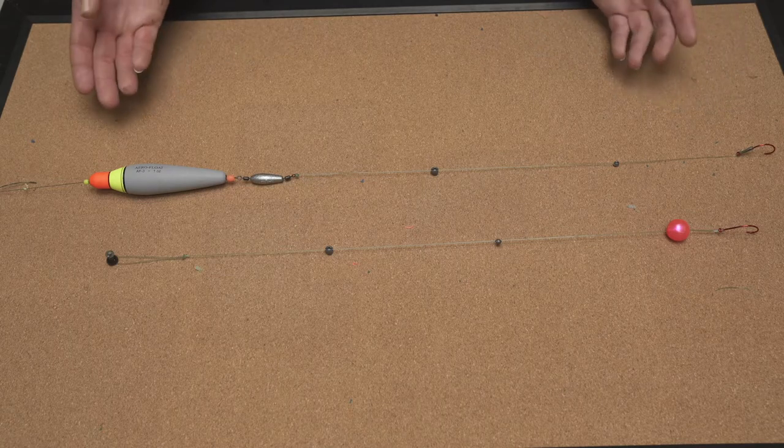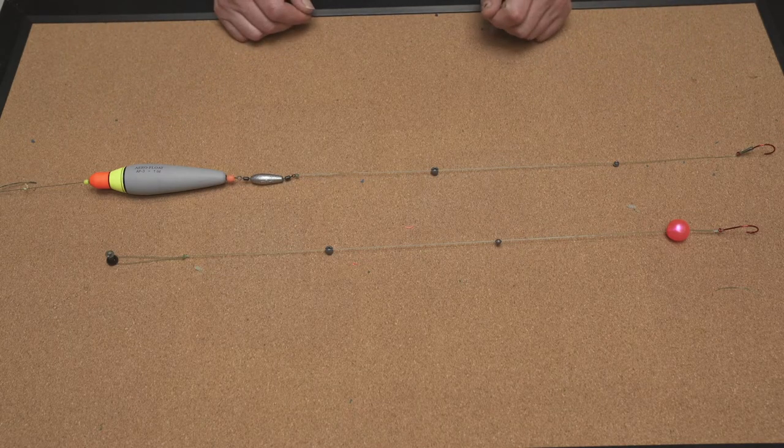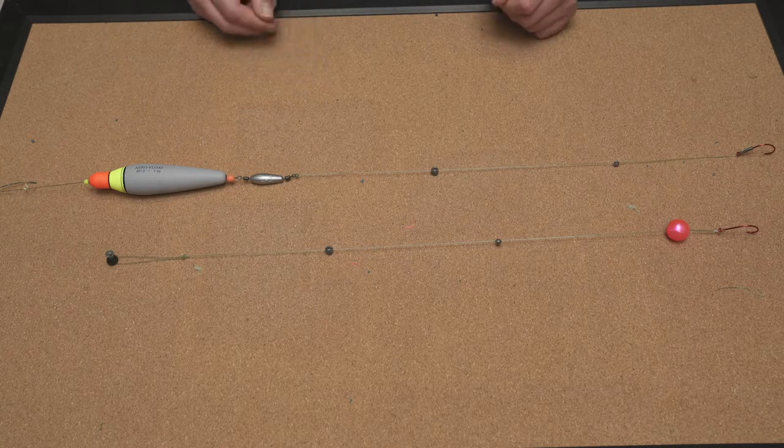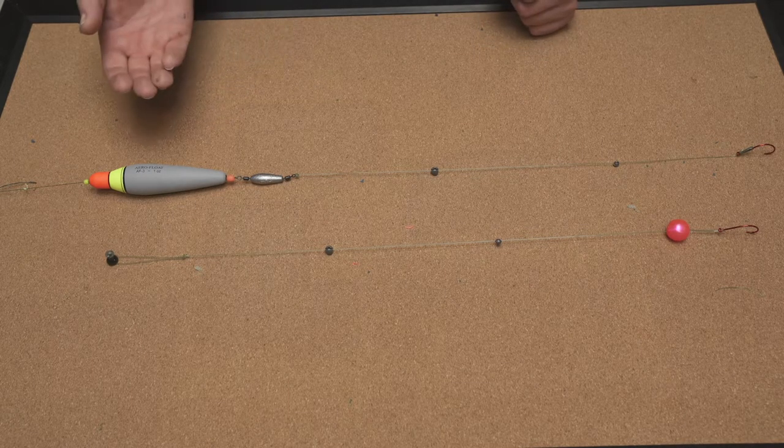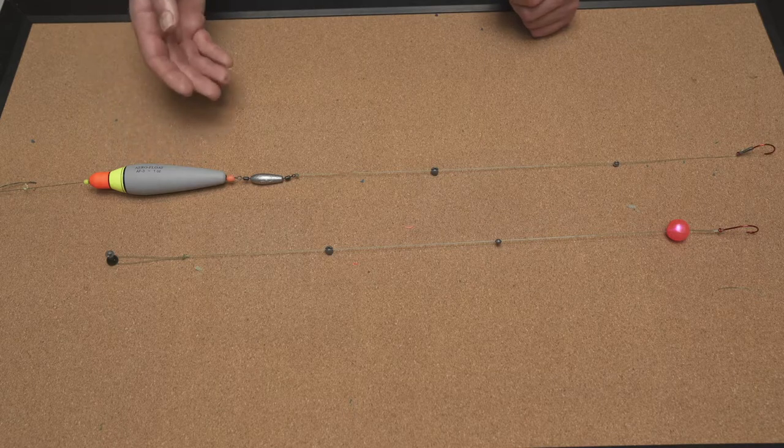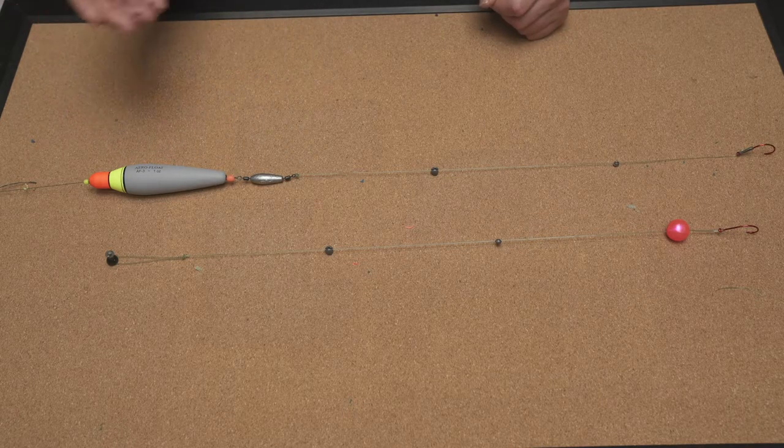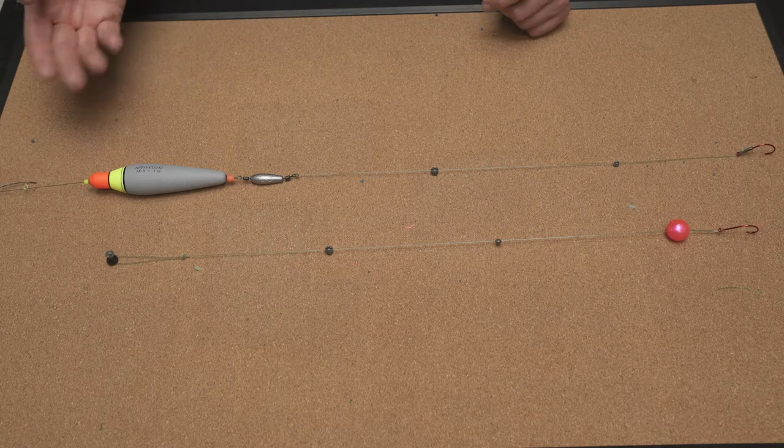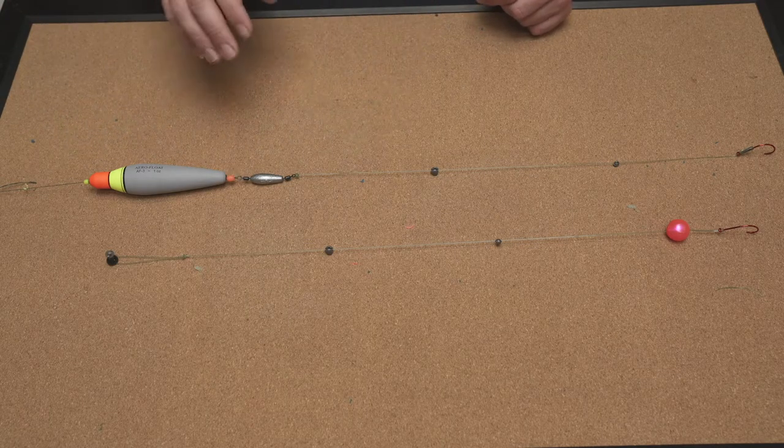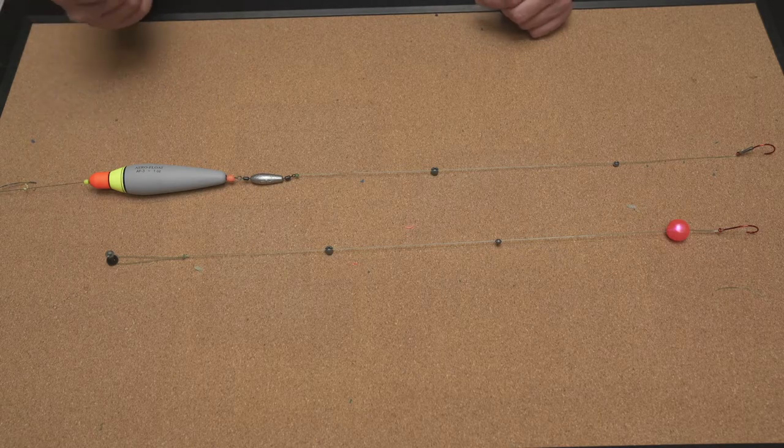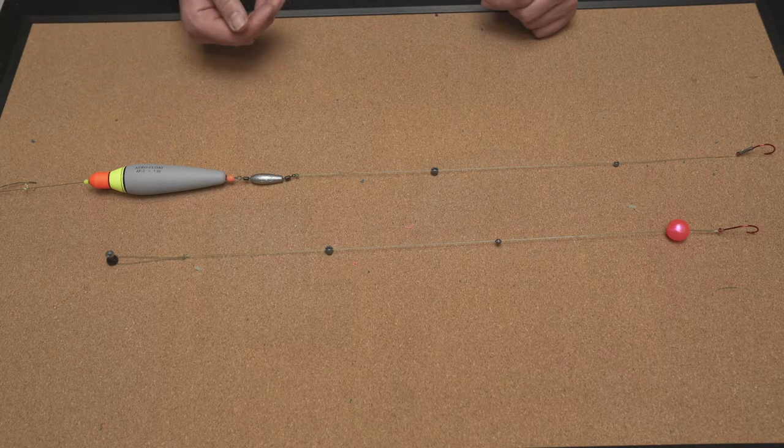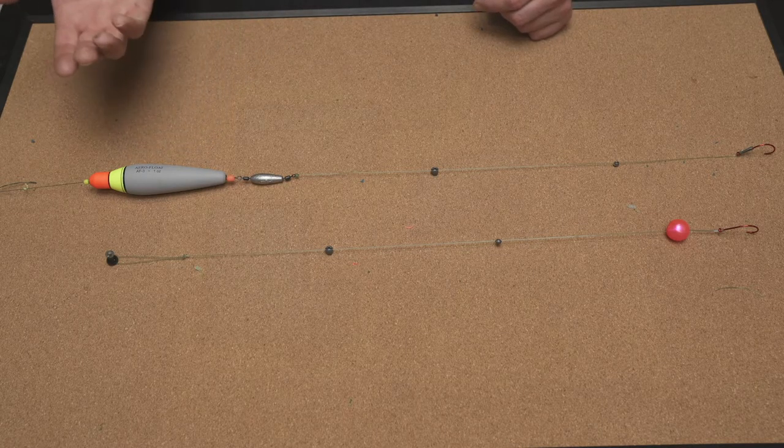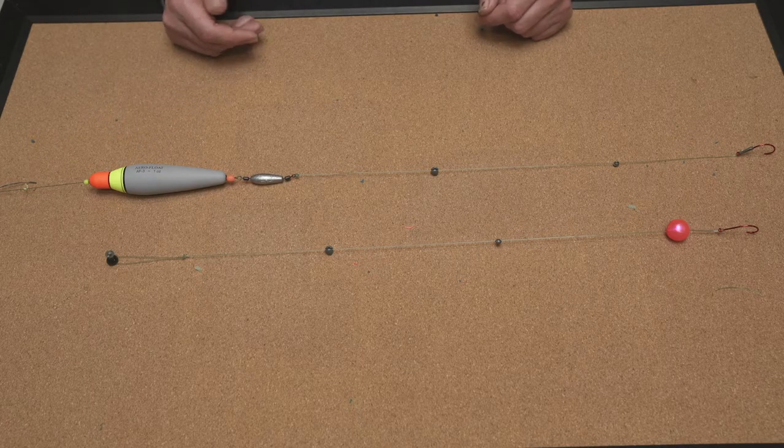The rigging we have in front of us is the setup that we use 90% of the time when we're float fishing for kings on the Togiak. Before we get into the setup, let's talk about rods, reels, and line. Generally speaking, when you're float fishing specifically, I'm looking for a rod that is nine foot long at a minimum. Nine to 11 feet long. You can certainly go longer. A nine foot rod, if you had to buy a do-it-all rod, would definitely take care of what we're trying to accomplish here. So nine foot plus, we're looking for a rod that's probably a medium heavy rating at the lightest. The rods that we're using at the Lodge are a nine foot Shimano Scimitar, rated 10 to 30 pound test. I believe they're medium heavy.